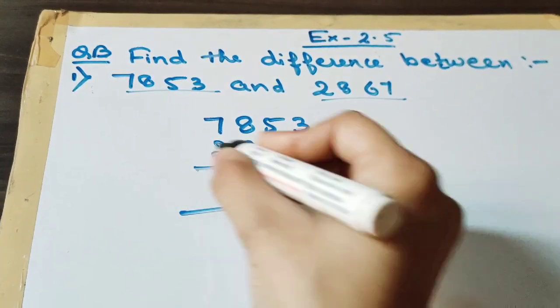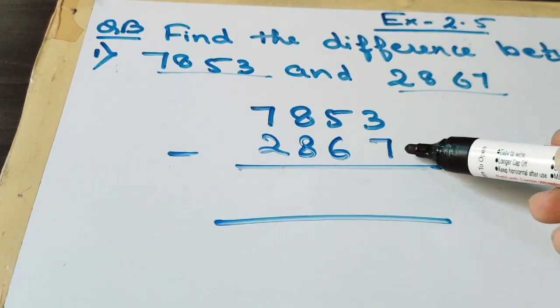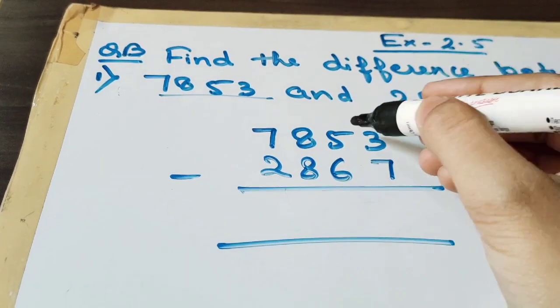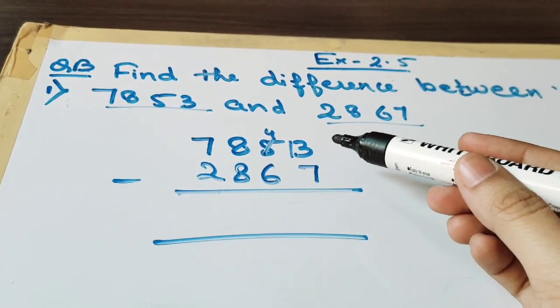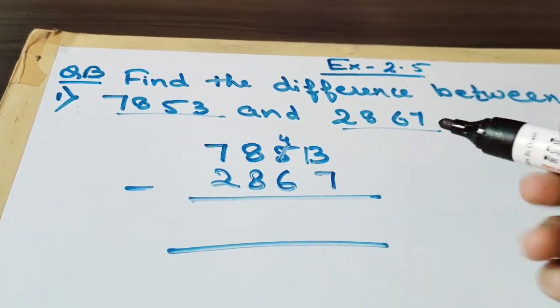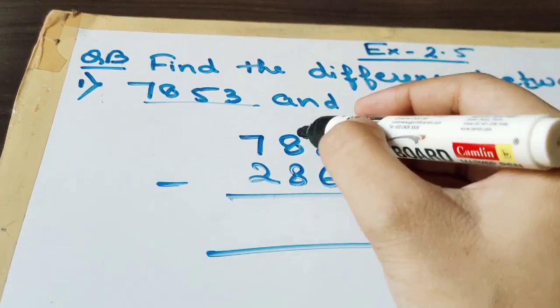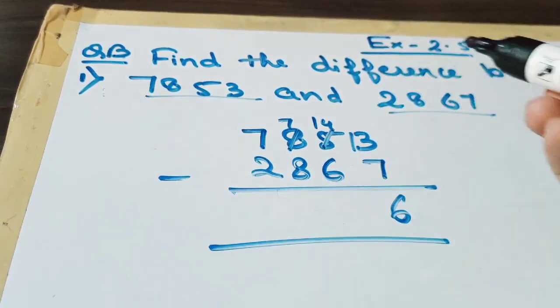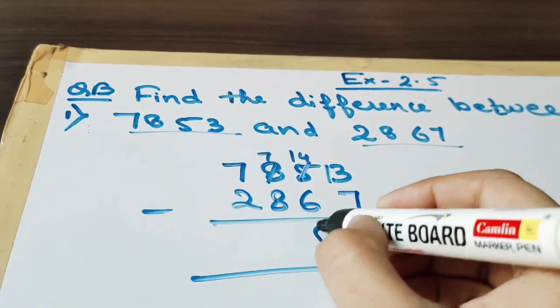Now subtract. It is not possible to subtract 7 from 3. So we will take borrow. This will be now 4 and this is 13 now. So 13 minus 6 is 8.